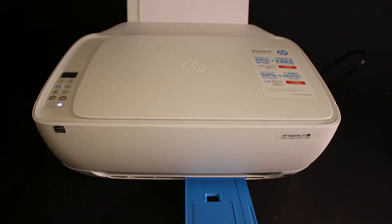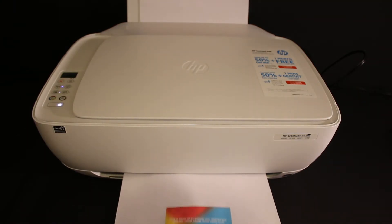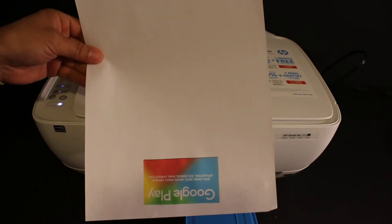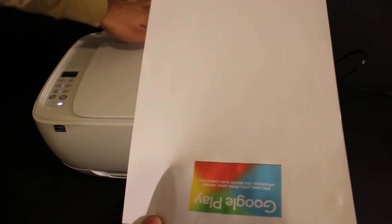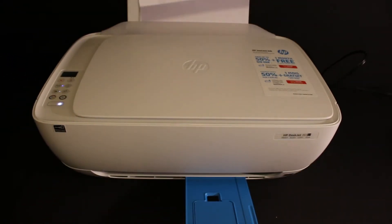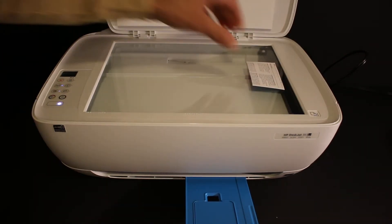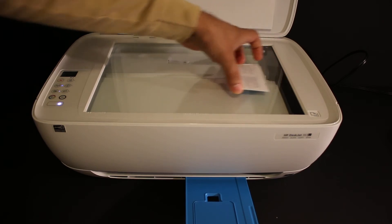Now we have to place this page again inside the paper input tray, facing downwards in the same direction. Open the paper output tray. Now put the back side of your ID facing downwards, just a few inches below the original one.